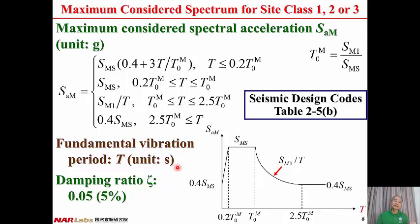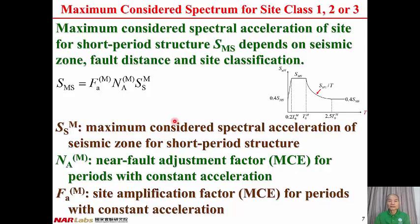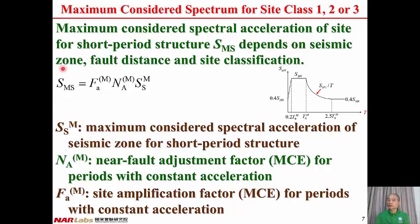T is the fundamental vibration period of the structure, with unit of seconds. The damping ratio is fixed to be 5%. The maximum considered spectrum can be fully described by two parameters: SMS and SM1. SMS — the maximum considered spectral acceleration of the site for short period structure — depends on seismic zone, the location of the site, fault distance, and site classification: whether it's site class 1, 2, or 3.